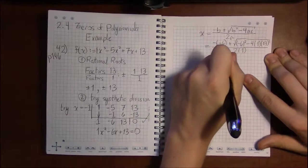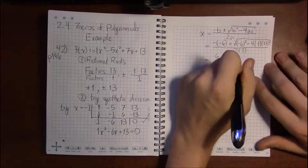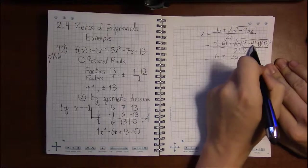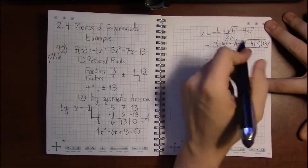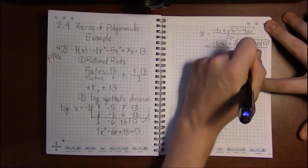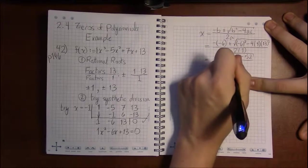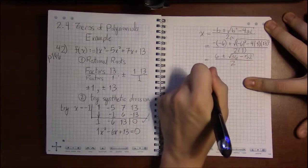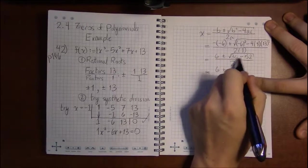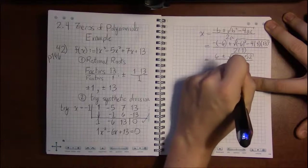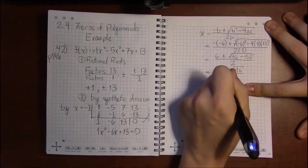Minus and minus 6 is just 6. Minus 6 squared is 36. Multiplying by 1 does nothing, so this is just 4 times 13 which is 52. So we have 6 plus or minus the square root of 36 minus 52, which is minus 16, divided by 2.